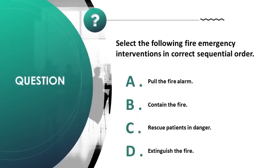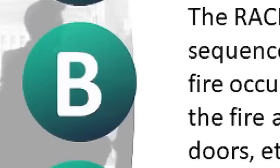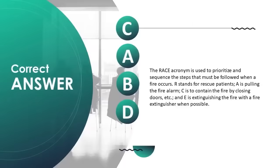Select the following fire emergency interventions in correct sequential order: A) pull the fire alarm, B) contain the fire, C) rescue patients in danger, D) extinguish the fire. Correct answer is C, A, B, D.